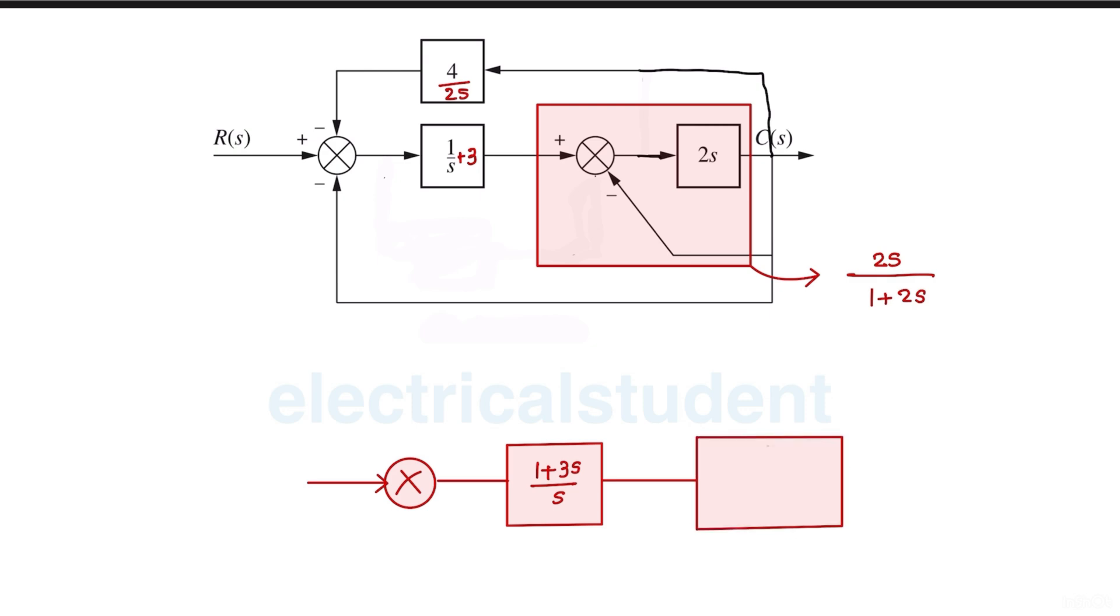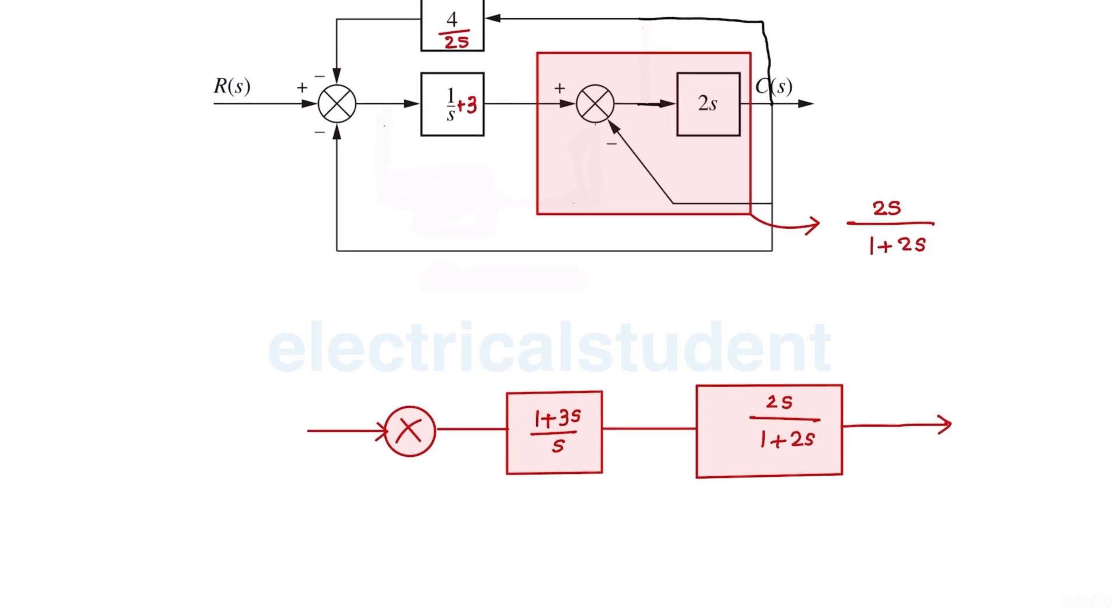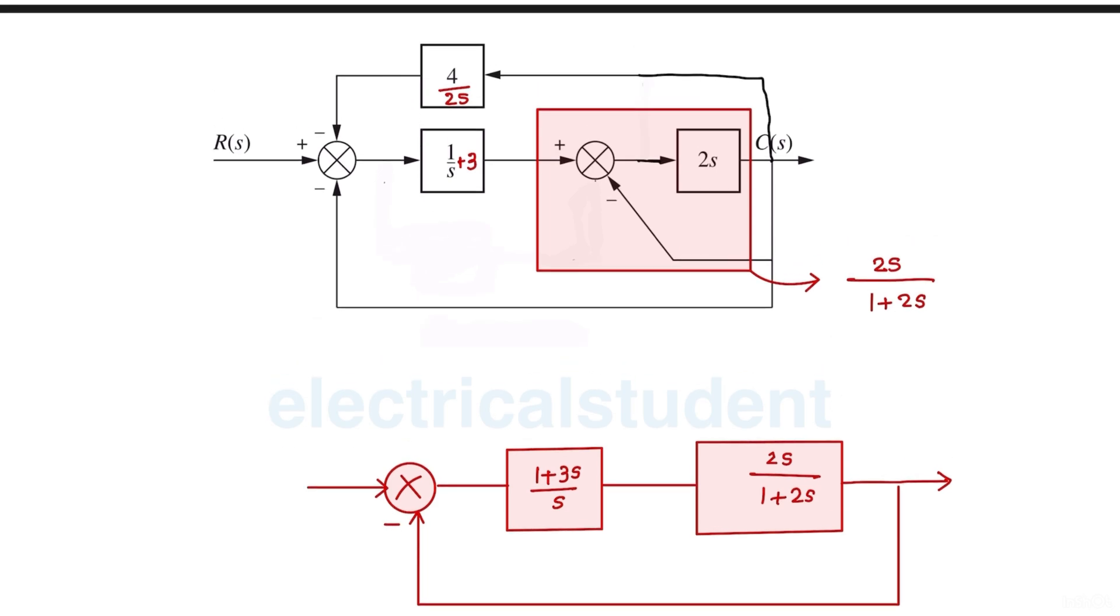And there will be one more block which is 2s over 1 plus 2s. And now there are two feedback paths. One is like this, this is basically a unity feedback loop. So there are two feedback loops, and apart from this there is one more feedback loop.